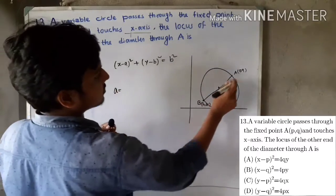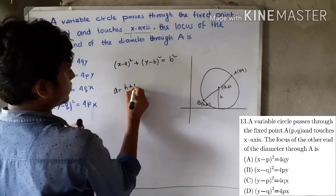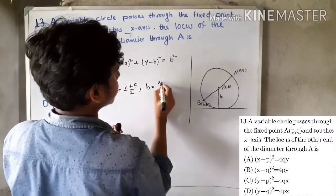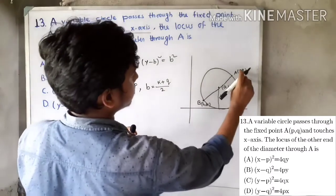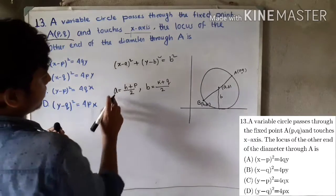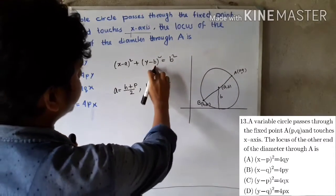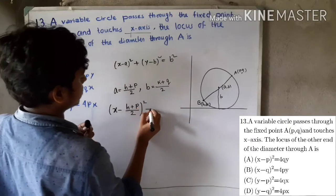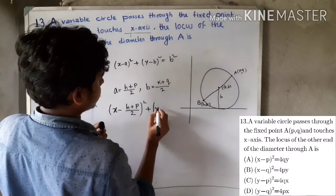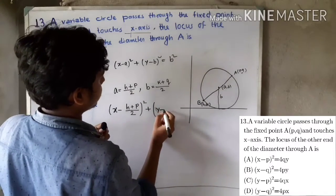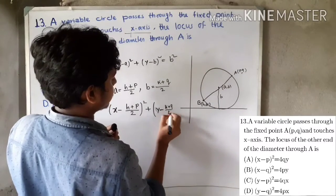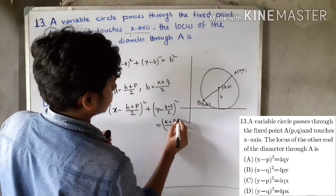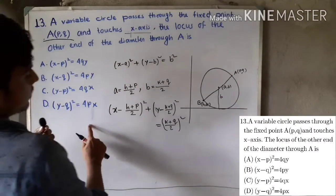Using the midpoint of B(h, k) and A(p, q), the center is ((h+p)/2, (k+q)/2) and radius equals (k+q)/2. So the circle equation becomes: (x minus (h+p)/2) squared plus (y minus (k+q)/2) squared equals ((k+q)/2) squared.